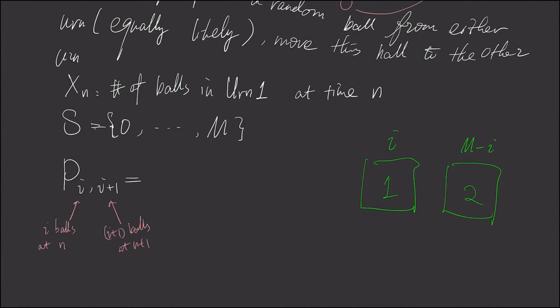If we have i balls at urn number one, and we have m minus i balls at urn number two, in order that we have i plus one balls at time n plus one for urn number one, we must have moved one ball. We picked one ball out from urn number two, and moved it.